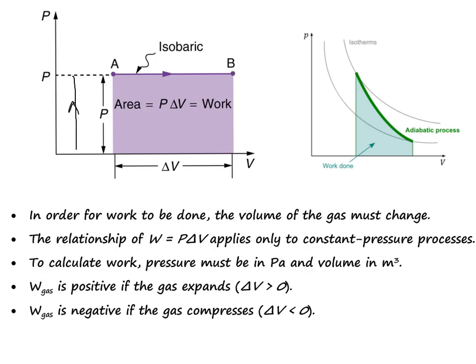Second, the relationship applies only to these constant pressure processes, isobaric processes. To calculate the work then, the pressure has to be in pascals and the volume must be in cubic meters. The work done by a gas is positive if the gas expands. So here we're showing an isobaric expansion. This would be positive work. The work done by the gas is negative if the gas compresses. So in an isobaric compression, that work would be negative.